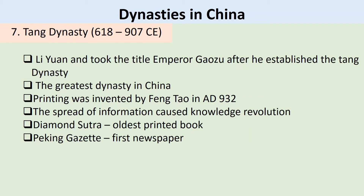Another of China's greatest contributions to the world was printing using movable blocks, invented by Feng Tao in the year AD 932. The Tang era printing press would be surpassed only by Gutenberg's metal printing press in Germany centuries later. With many books in circulation, more people learned to read and write — even the lower class could obtain information. Thus, more poor but distinguished scholars passed the imperial exams and rose in society. The spread of information caused a knowledge revolution. The world's oldest printed book, called the Diamond Sutra, and the first newspaper, called the Peking Gazette, were published during this time.